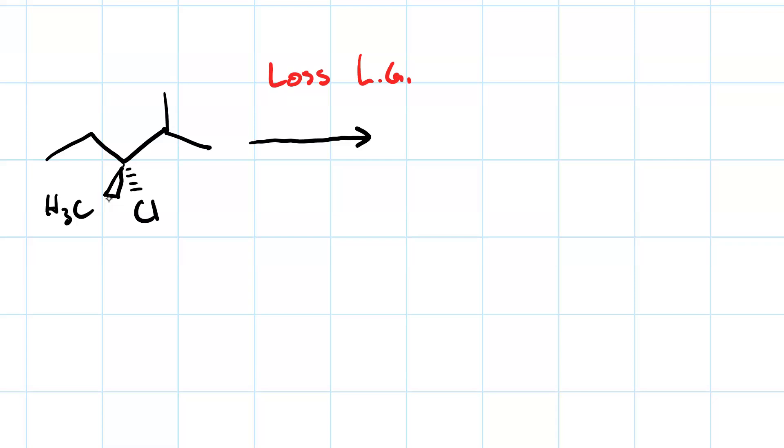We're going to get a carbocation. Chlorine's going to leave and we get this carbocation. Now, to stabilize that carbocation, a protic solvent works really well. Water is very often a useful solvent.